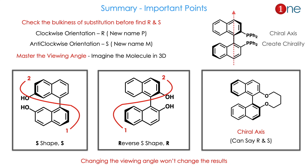Let us summarize. Binaphthyl compounds are chiral due to the chiral axis. Before finding R and S configuration, you must confirm the chirality of the compound — bulkiness decides the chirality; the bulkier the groups, the better the chirality. Clockwise orientation means R, new name P; anti-clockwise means S, new name M. Master the viewing angle to get R and S configuration — imagine the molecule in 3D. The trick method: S-shaped curve is S configuration, reverse-S is R configuration. The chiral axis can also arise from side-chain attachments. Importantly, changing the viewing angle of the compound will not change the results.